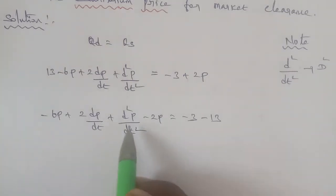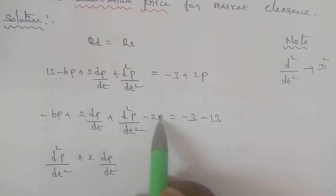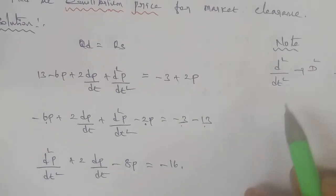So we have d²p/dt² plus 2 dp/dt, and the remaining terms minus 6p and minus 2p gives minus 8p equal to minus 3 minus 13, which equals minus 16.